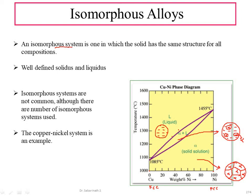So this is known as an isomorphous system — it will have a well-defined solidus as well as a liquidus line. The nucleation grows to full-size solid grains, forming polycrystals with a single phase. This is all about isomorphous alloys, and a typical example is the copper-nickel system.